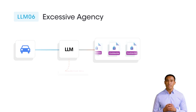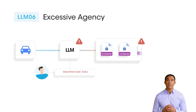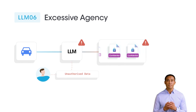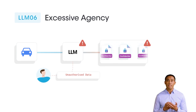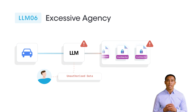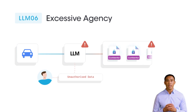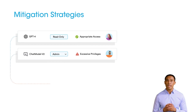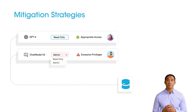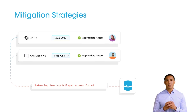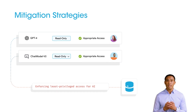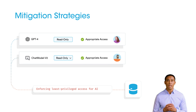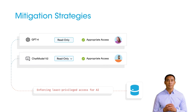Excessive agency risks arise when LLMs are granted unauthorized autonomy or functionality beyond their intended scope. Example: a car dealership's LLM agent with excessive privileges exposes confidential next-quarter sales promotions, impacting current sales and revenue. Discover and manage AI models and entitlements to enforce least-privileged access. Cross-verify user prompts with their entitlements to prevent unauthorized data access. Combine data source-level access controls with LLM-specific governance mechanisms.